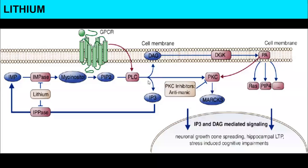To treat mania, you administer lithium — yes, that's the metallic mineral. When you administer lithium, I'm sure you remember the entire cycle we discussed when talking about GPCRs in the first few videos. If you've forgotten, you should go back to the G protein-coupled receptors video to revise.